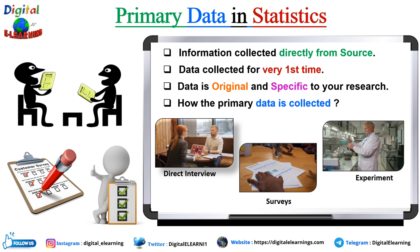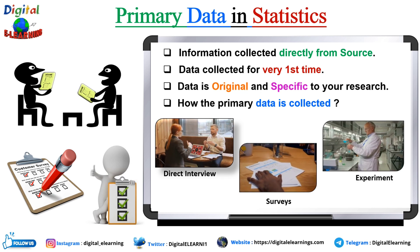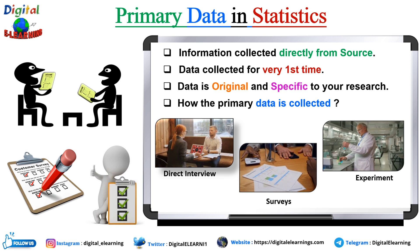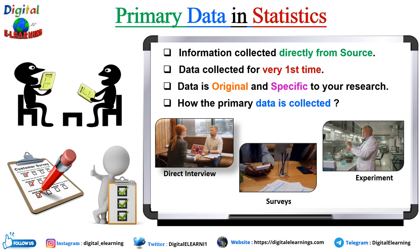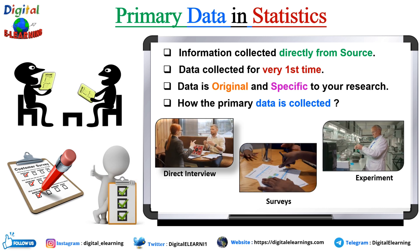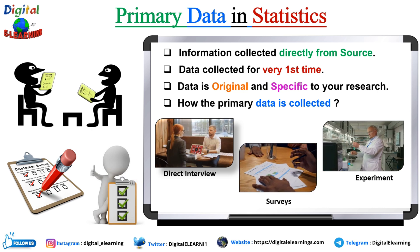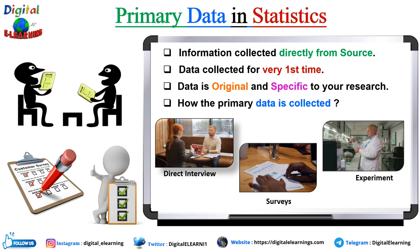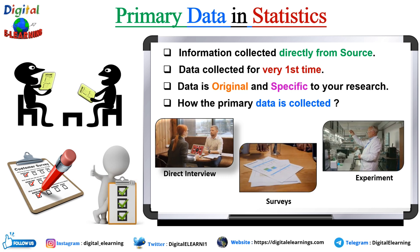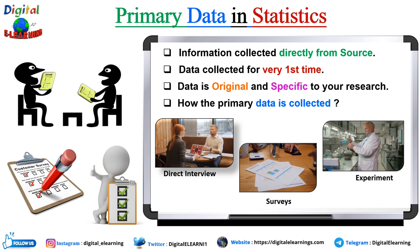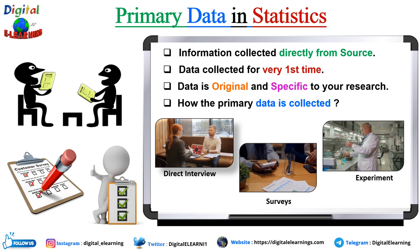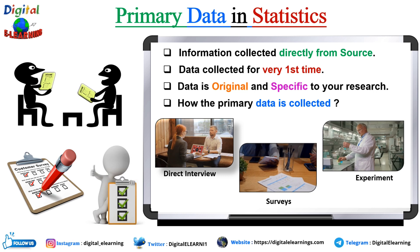The important part is that primary data refers to firsthand data collected directly from the source — it is real-time data gathered specifically for a particular research purpose, making it highly reliable. However, collecting primary data is often more time-consuming and resource-intensive. This type of data is typically used for high-level research projects where accuracy and relevance are crucial.